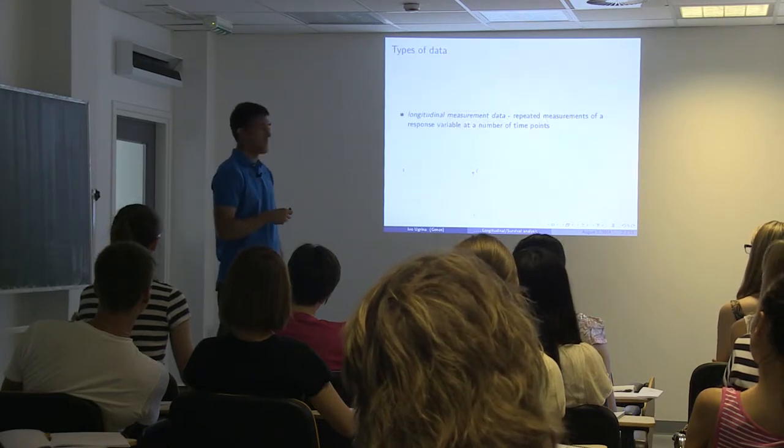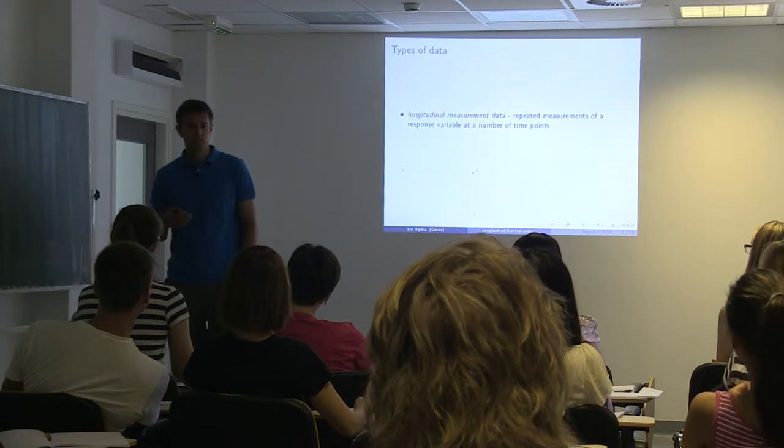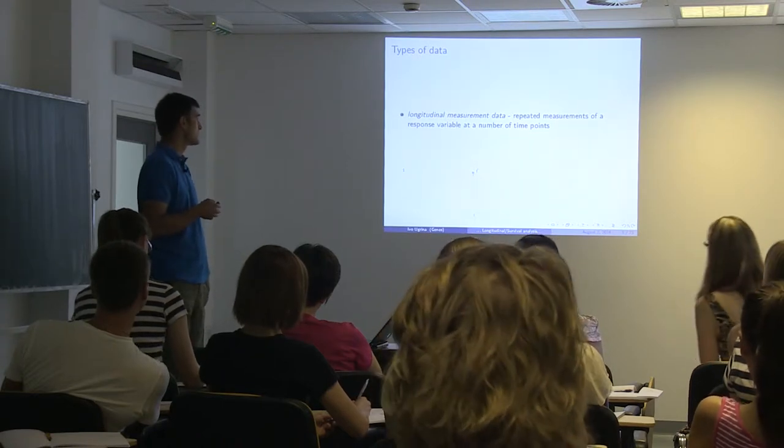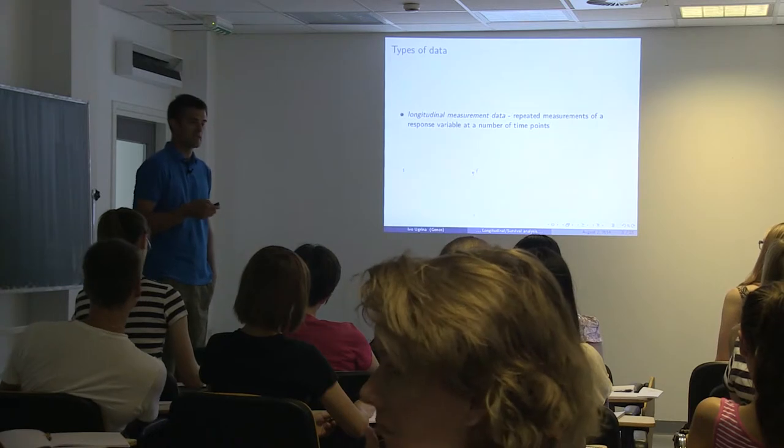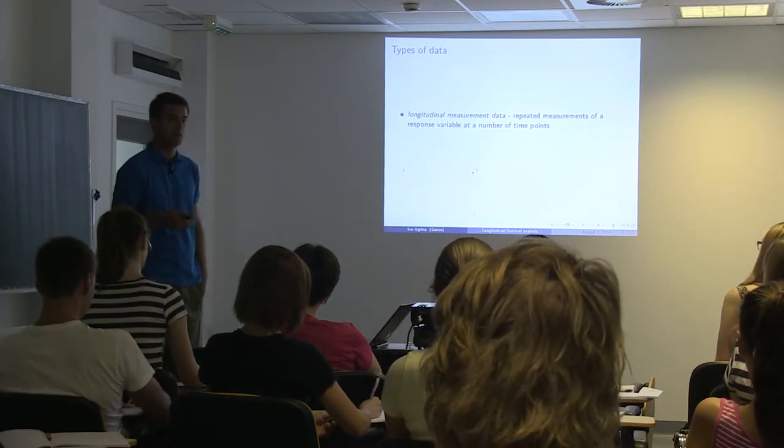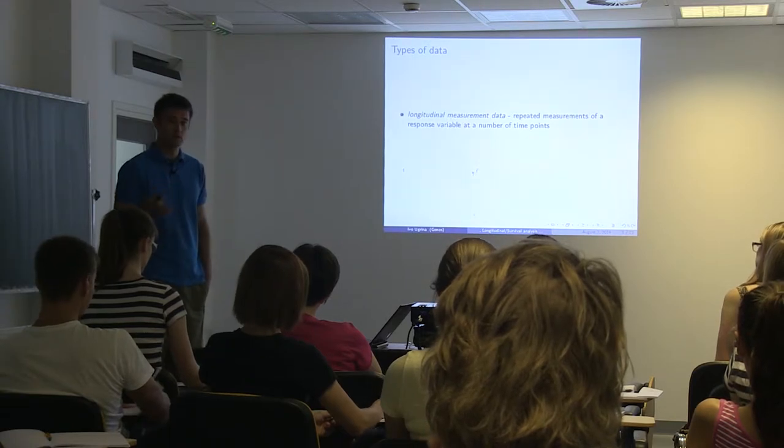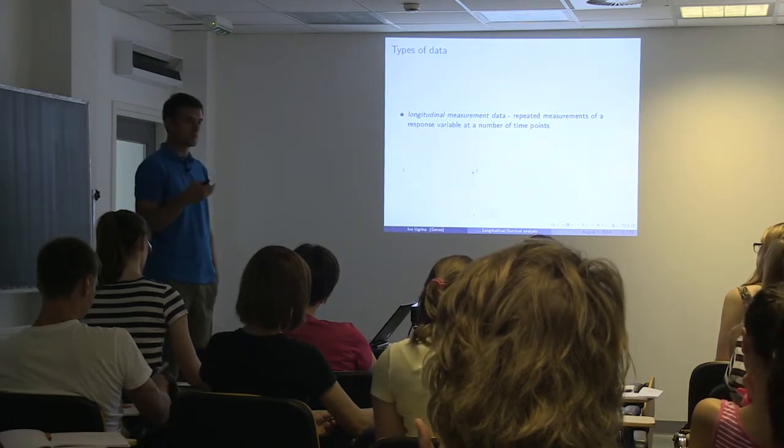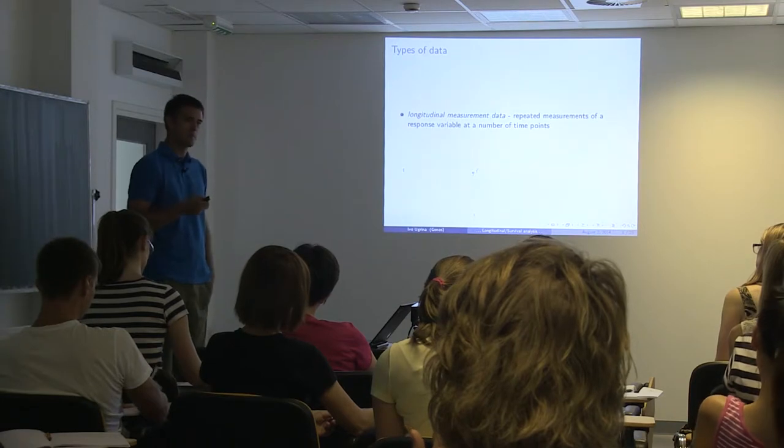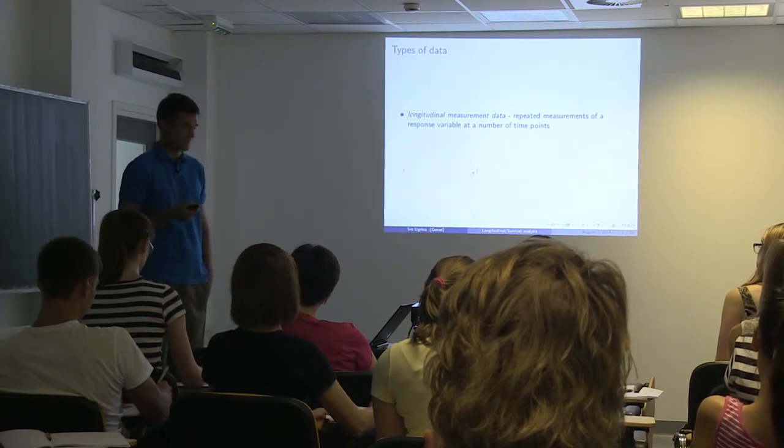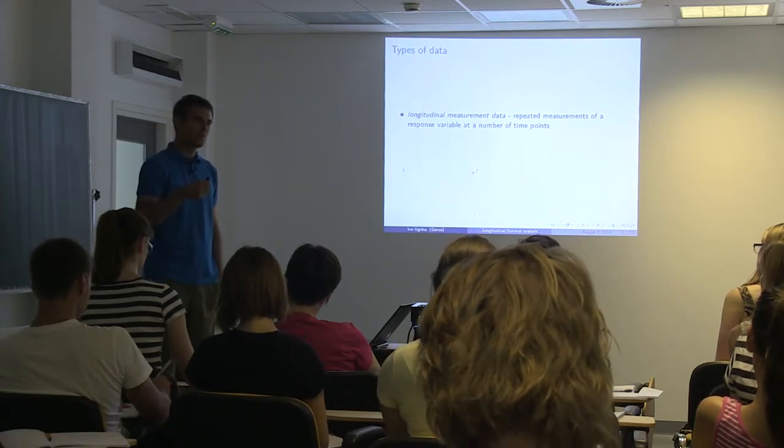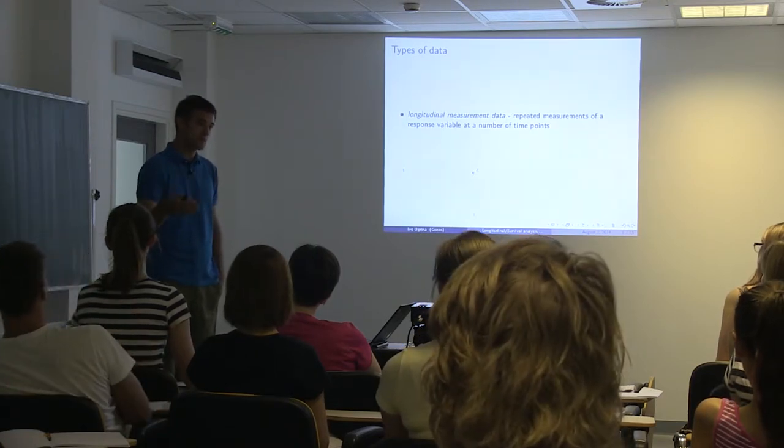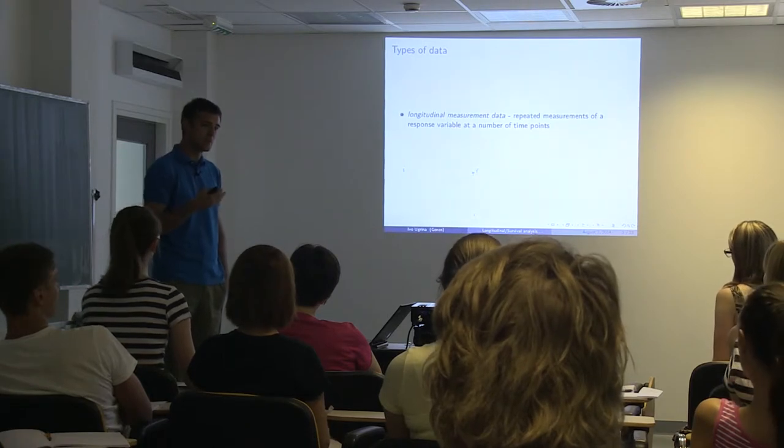So usually we have two different types of data regarding time data. The first one is called repeated measurements - longitudinal measurement data which are repeated measurements of a response variable at a number of time points. As I said with cars, if you have regular car checks after one month, three months, then a year - that's regular intervals. Or as Gordon told you before, you make measurements before the surgery, then 12 hours after the surgery, maybe seven days after the surgery. You don't have something like survival, you just measure something in some time periods and want to see if there is any difference during those time periods.